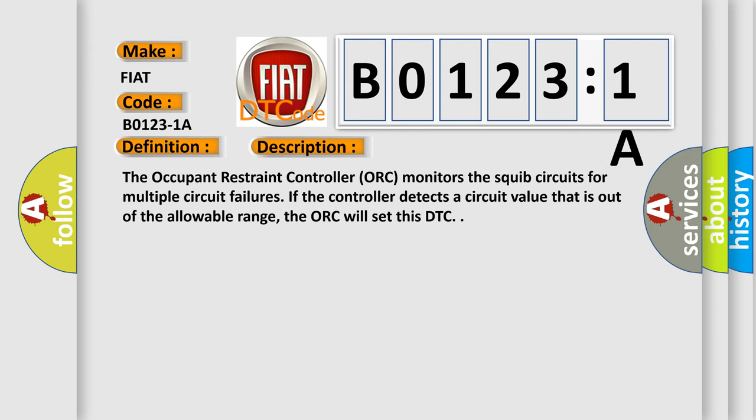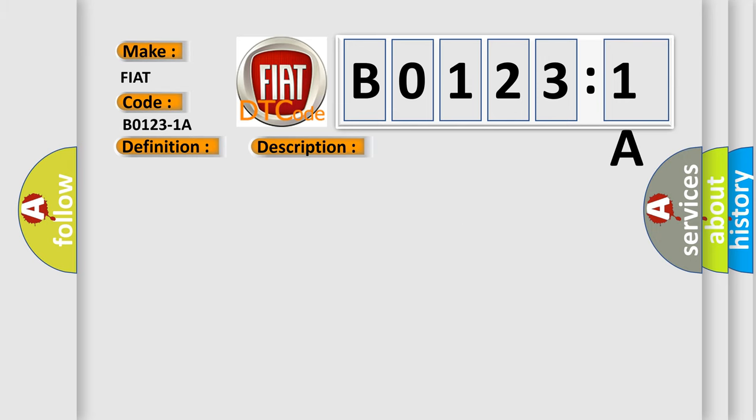The occupant restraint controller ORC monitors the squib circuits for multiple circuit failures. If the controller detects a circuit value that is out of the allowable range, the ORC will set this DTC. This diagnostic error occurs most often in these cases.